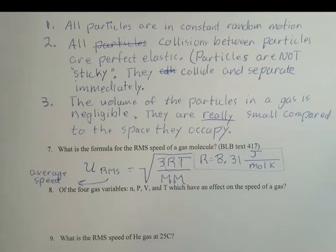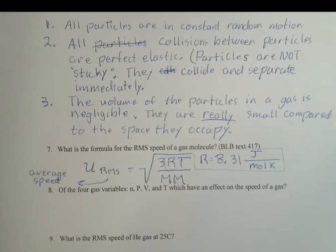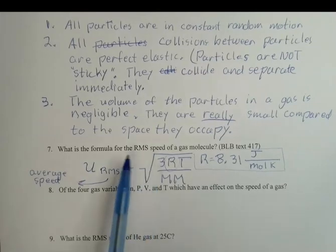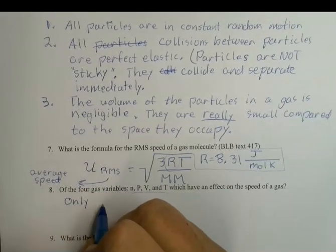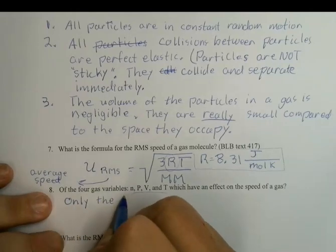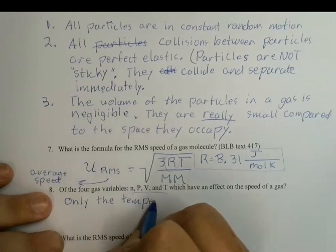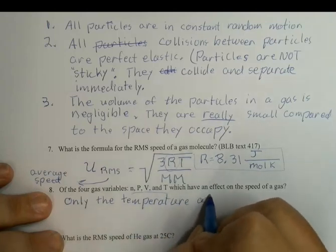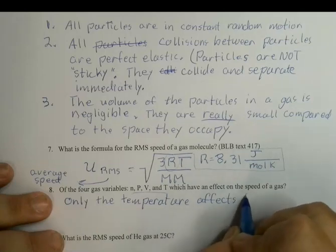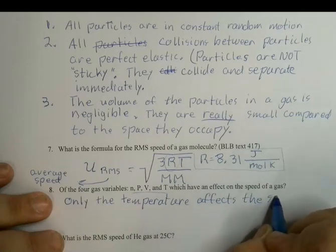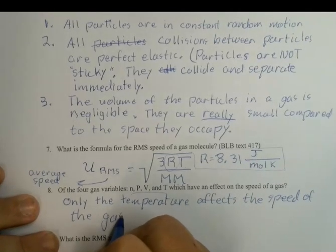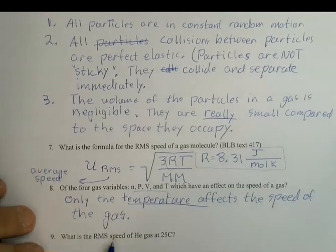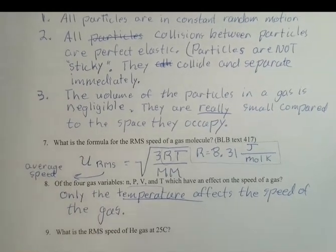Of the four gas variables — n, P, V, and T — which affects the speed of the gas? Looking at the RMS formula, only temperature appears. So only temperature affects the speed of the gas — not pressure, not volume, not number of moles.